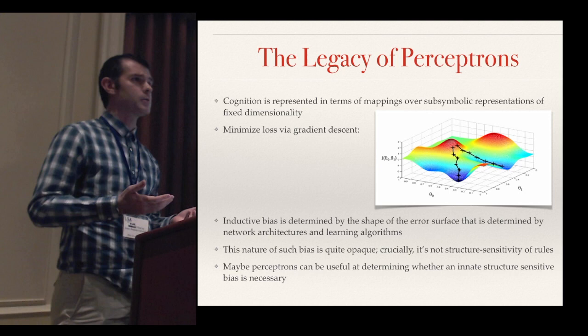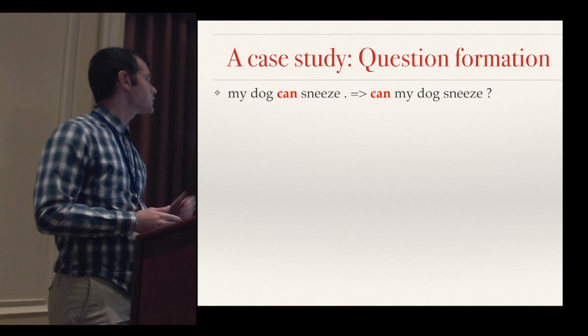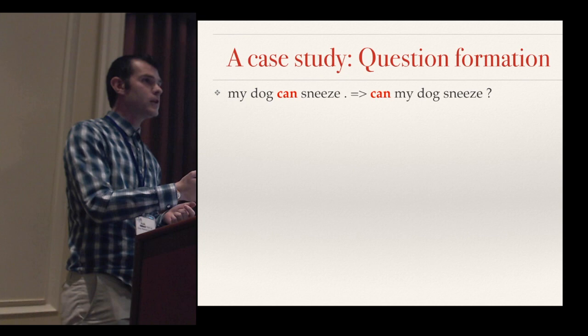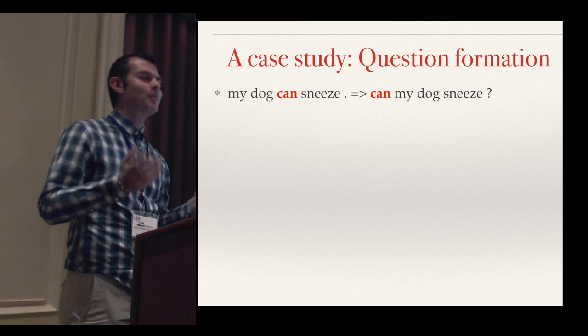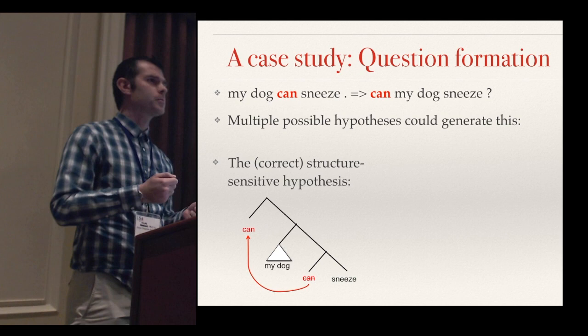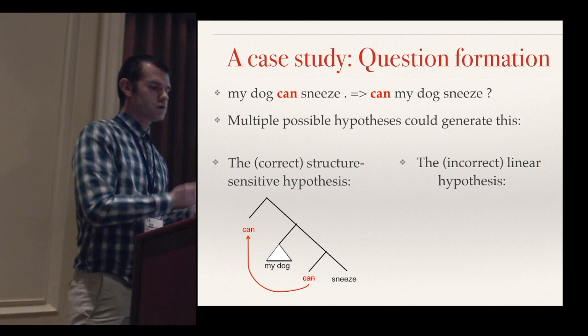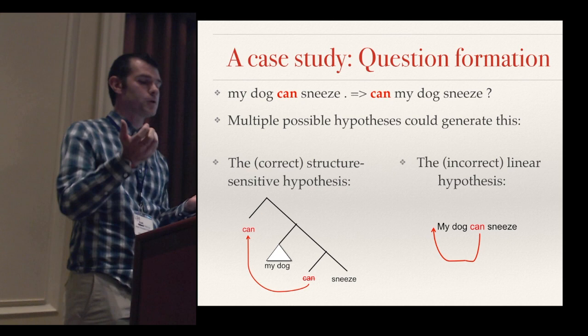Now I'll zoom in on the case study of question formation in English. Consider a simple English declarative sentence like 'my dog can't sneeze.' If you want to turn that into a yes-no question, you take the main auxiliary verb and move it to the front to get 'can my dog sneeze?' But if you imagine that you're a child language learner, there are multiple possible hypotheses for rules that could generate this correct output. The correct hypothesis is to parse the input sentence and move the main auxiliary to the top of the tree. But there are other hypotheses, such as looking at the linear order of words like beads on a string and taking the first auxiliary you find and putting it at the front.